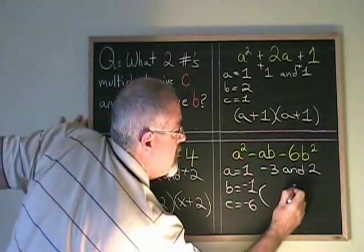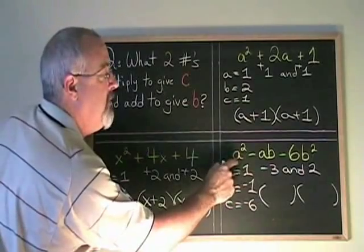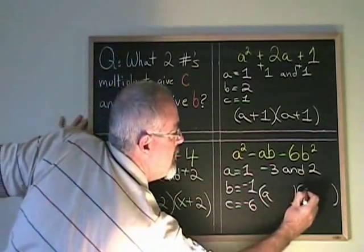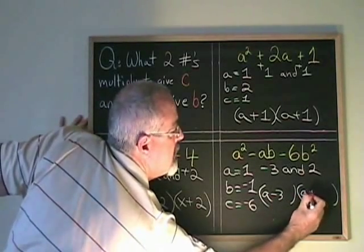I write my binomials. The square root of a² going in the first position. I have a minus 3 and a plus 2.